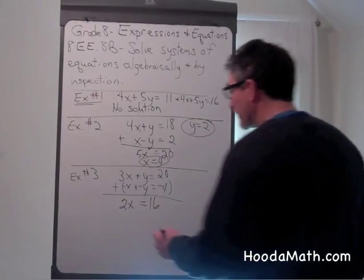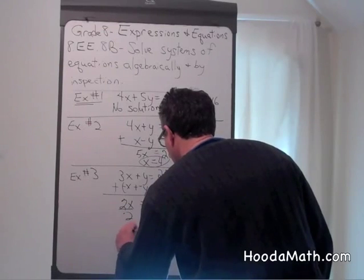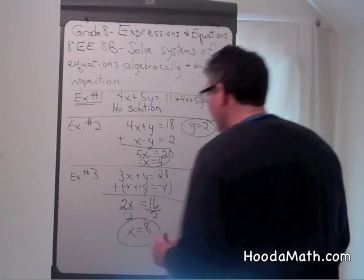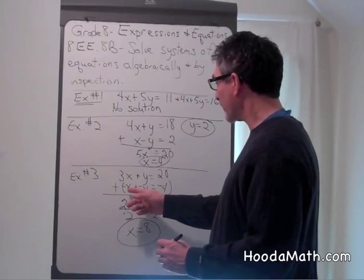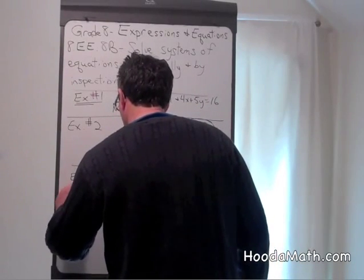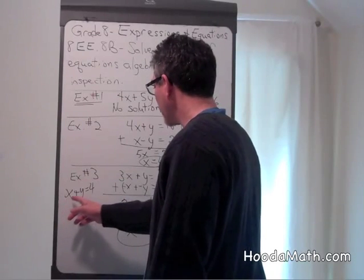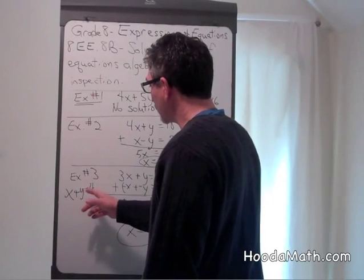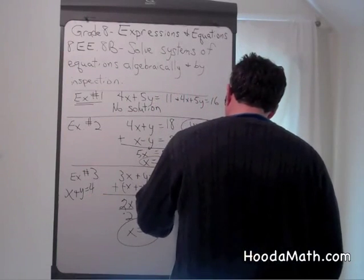Dividing both sides by 2, x equals 8. If x equals 8, we go to the original problem, x plus y equals 4. If x is 8, what do you have to add to 8 to get 4? y would be negative 4.